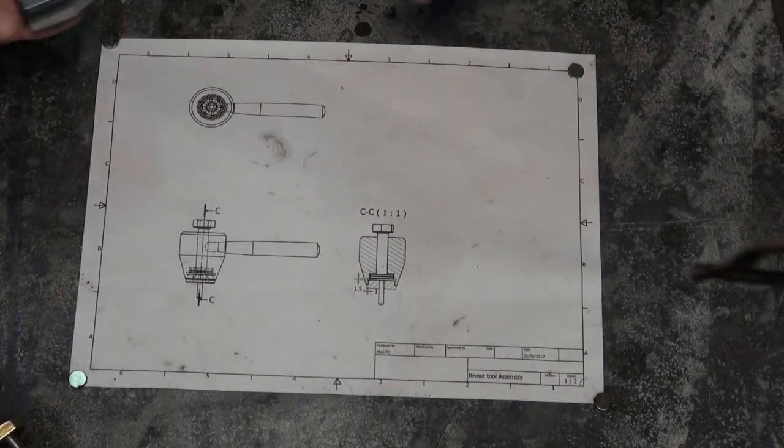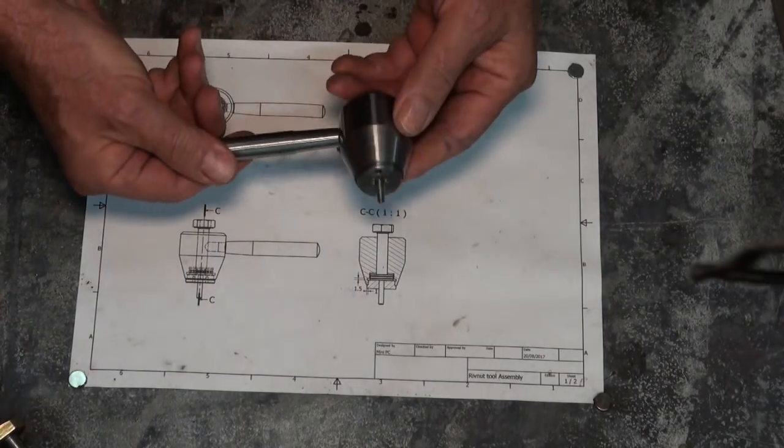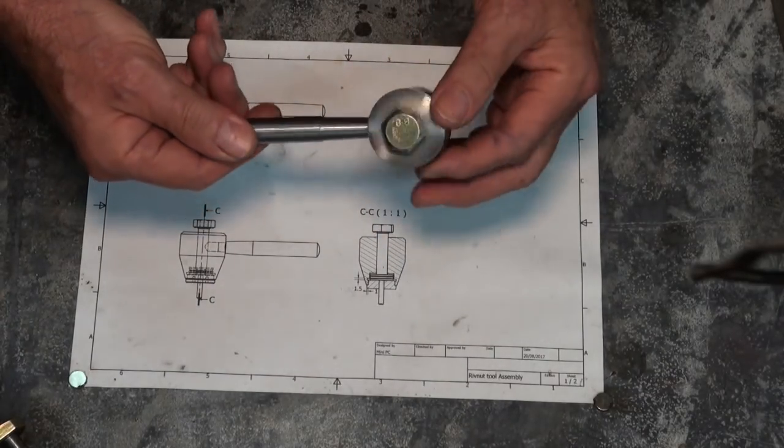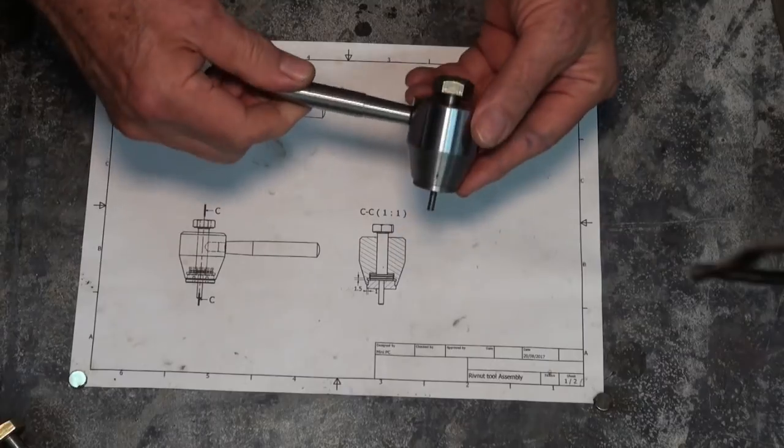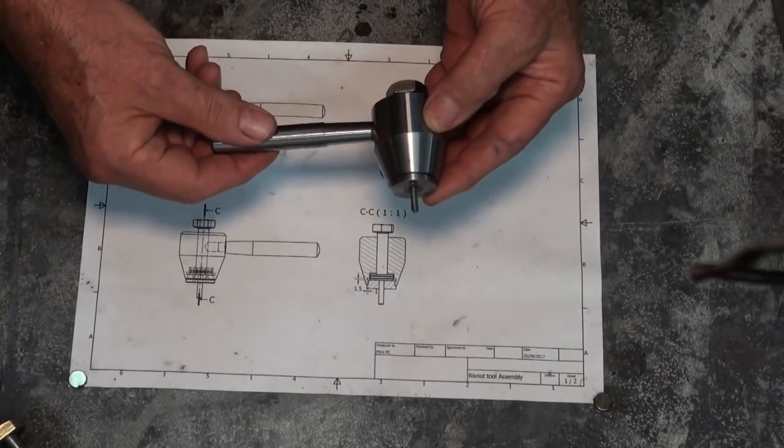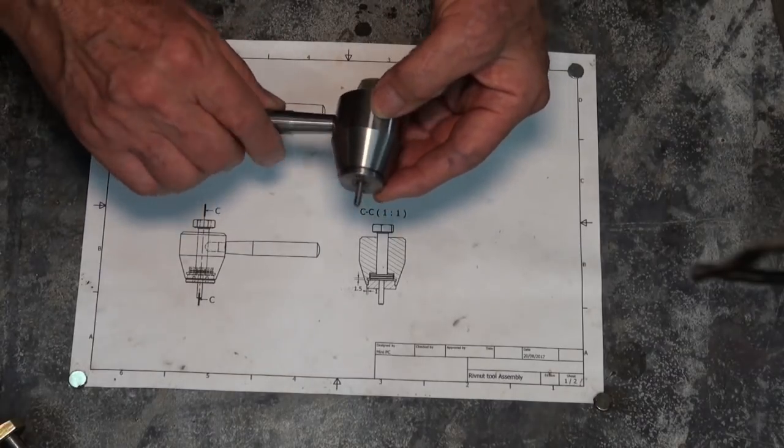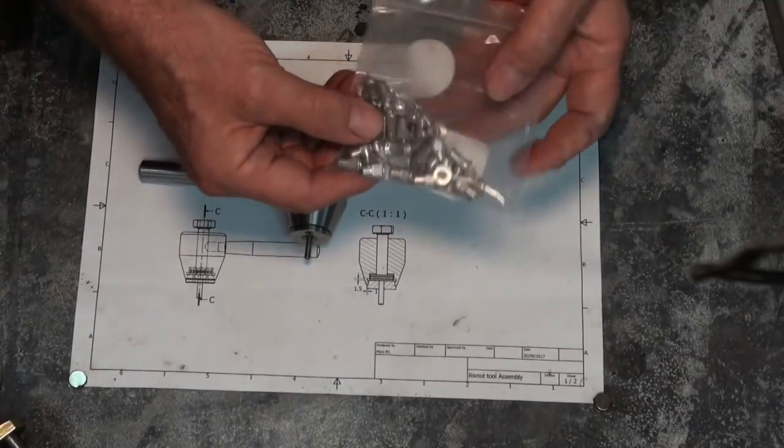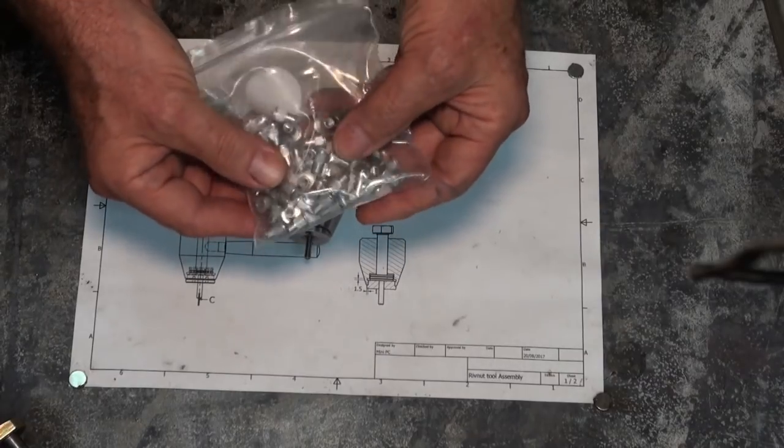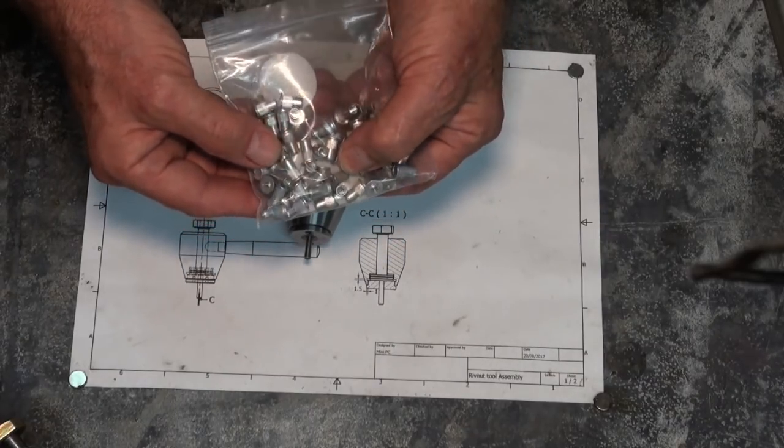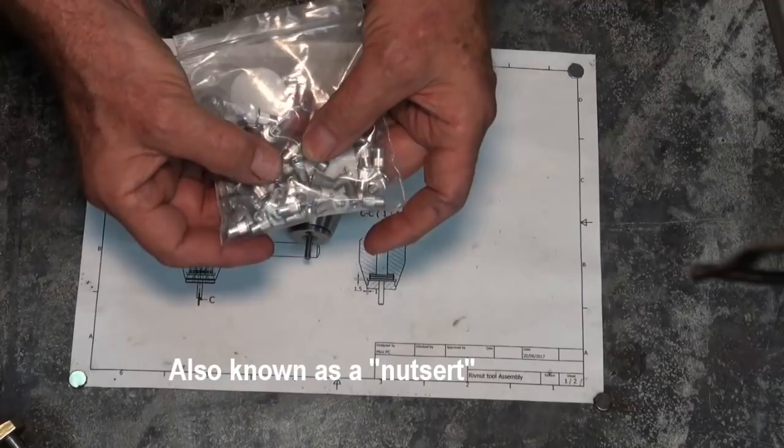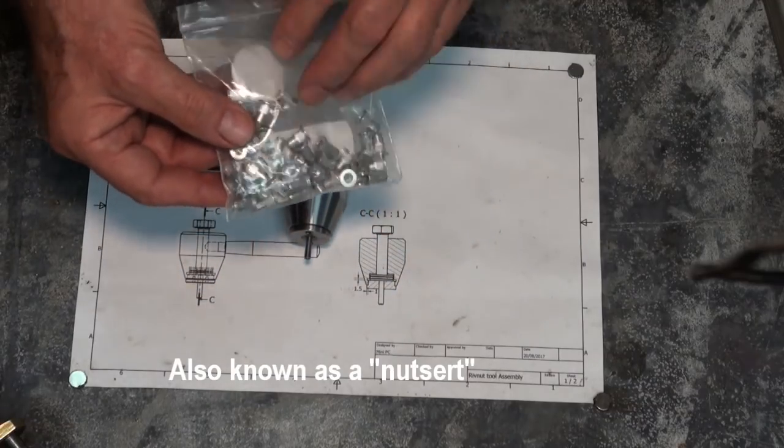However, the reason we're here today is to talk about this tool. Now, this is called a rib nut tool for inserting threaded fasteners into thin material. These things look like that. These are four millimeter metric rib nuts.